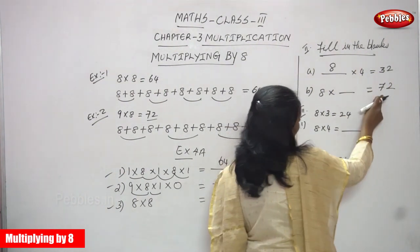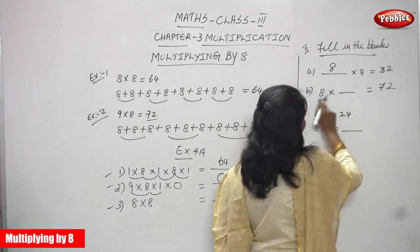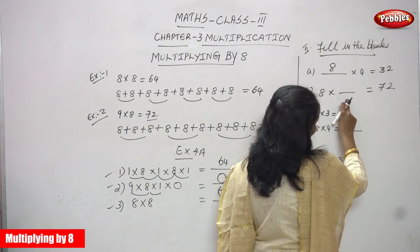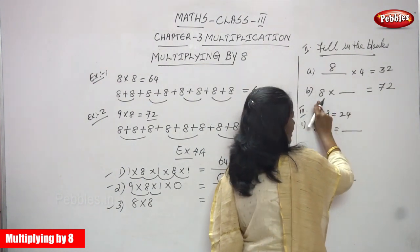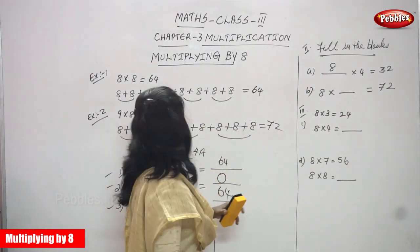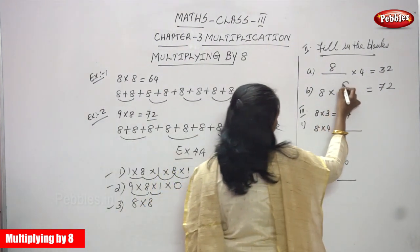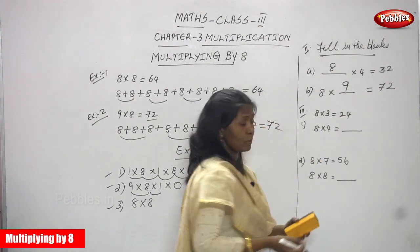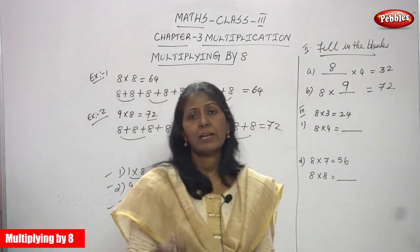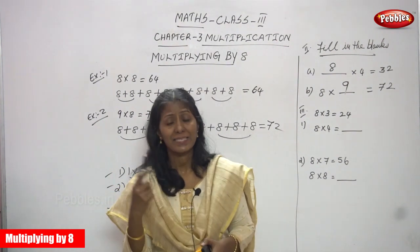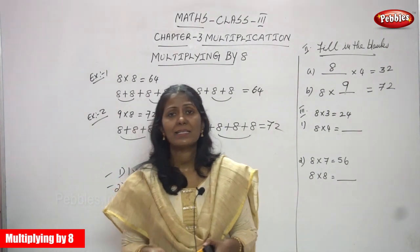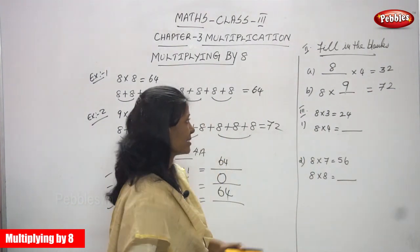Next: the answer is 72 and the first number is given, but the second number is not. You will find the second number and write it in the blank. Use the 8th table up to 72: 8 ones are 8, 8 twos are 16, 8 threes are 24, 8 fours are 32, 8 fives are 40, 8 sixes are 48, 8 sevens are 56, 8 eights are 64, 8 nines are 72. The answer is 9.